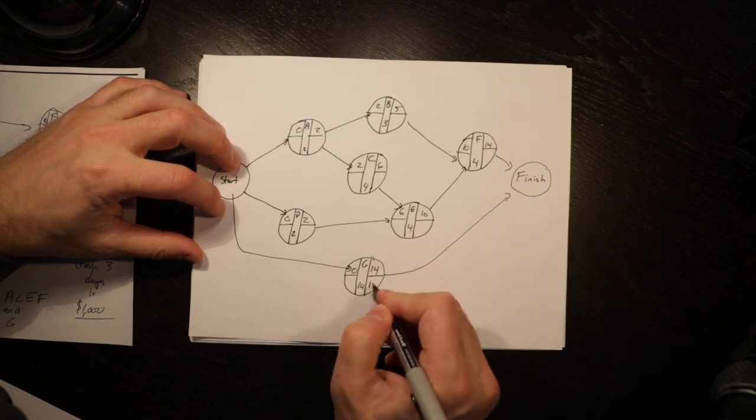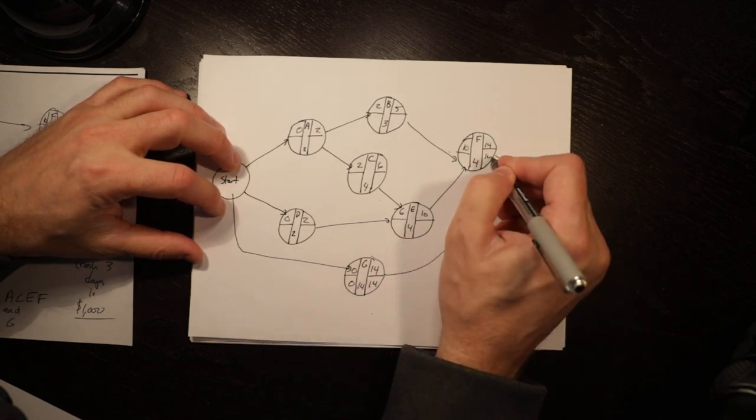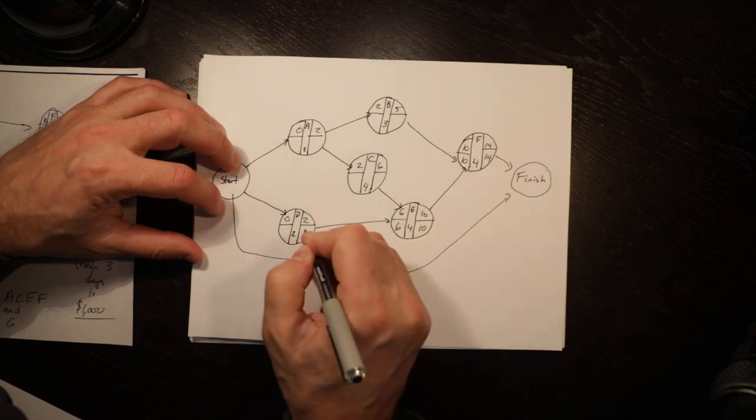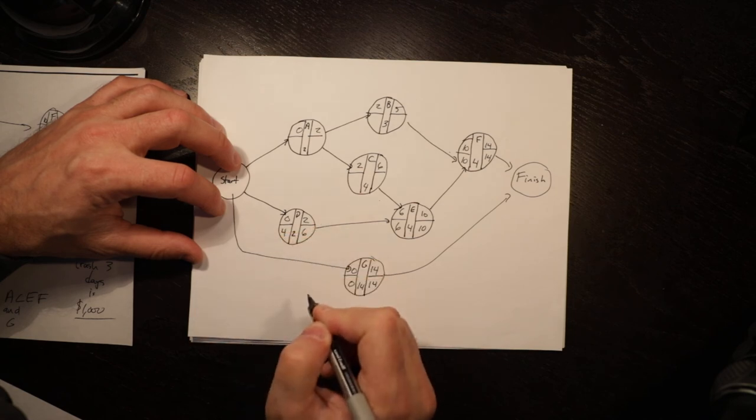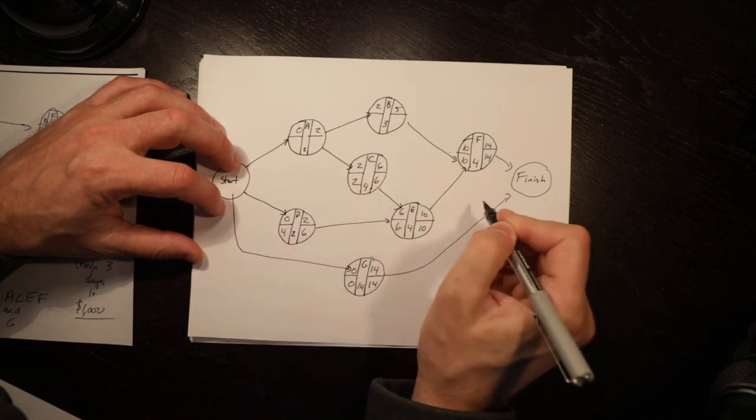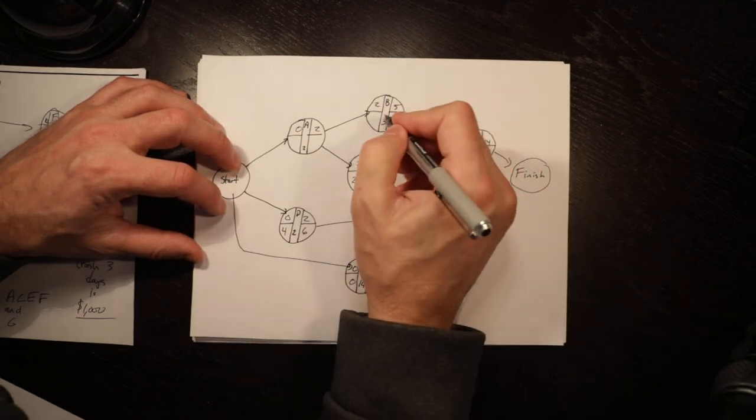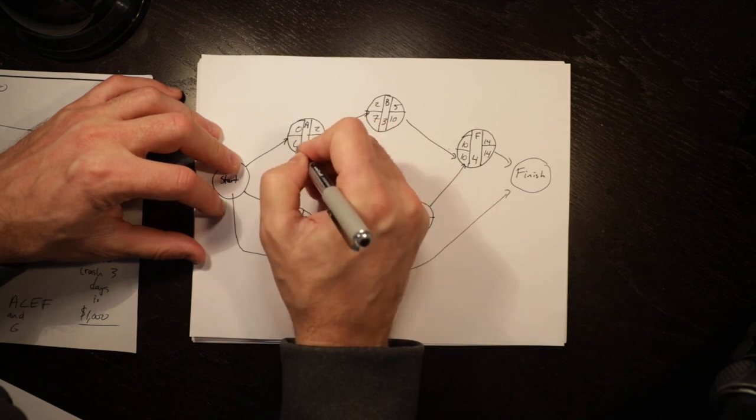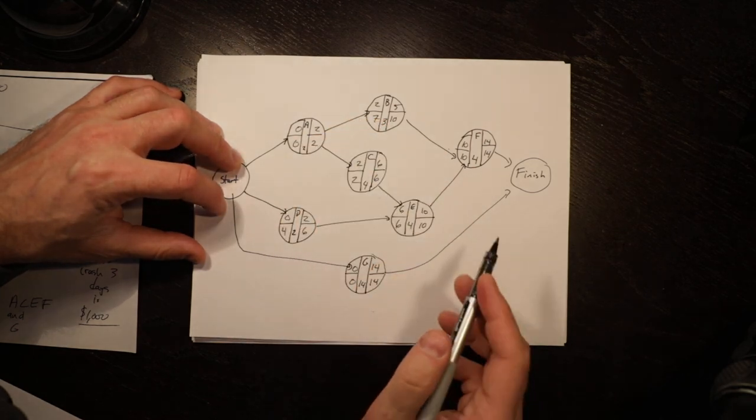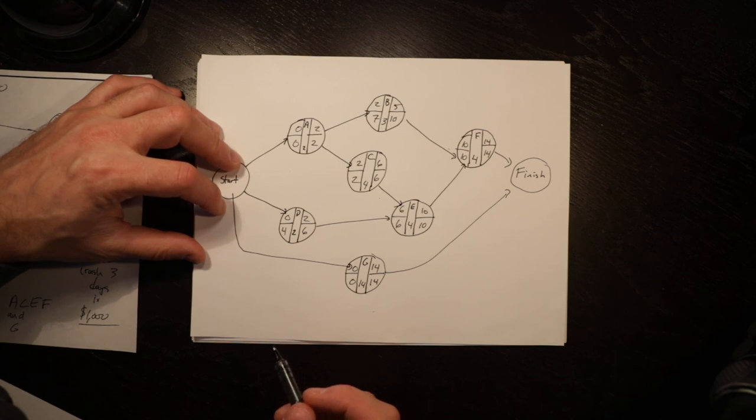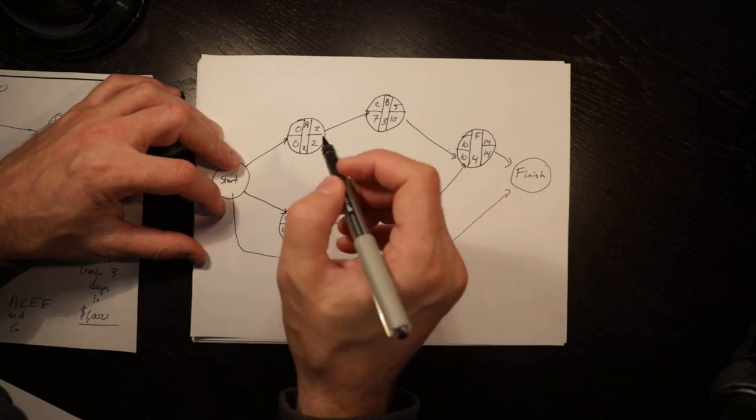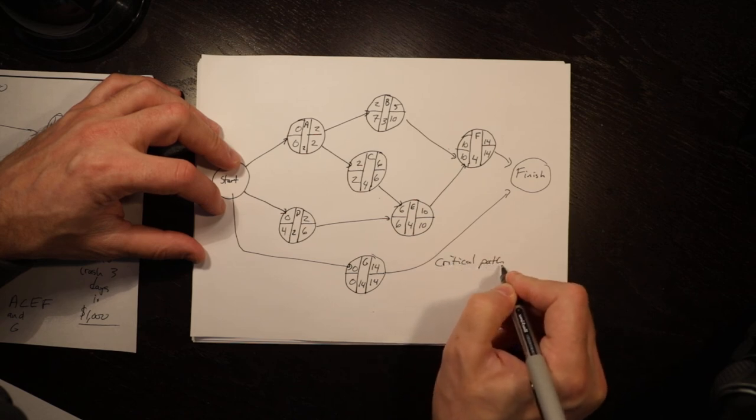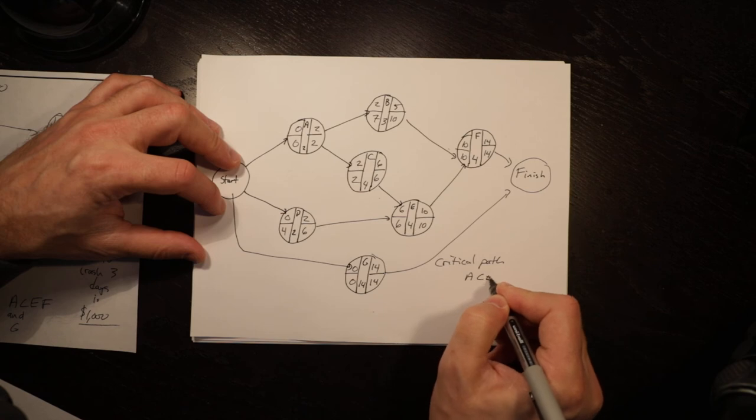Working backwards through the network calculations to verify, we've shortened the network by one day which was our objective. We still have critical path A, C, E, F.